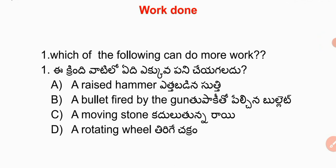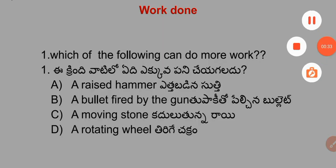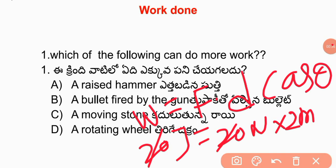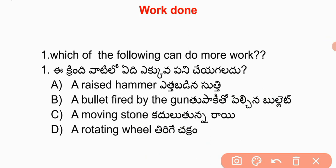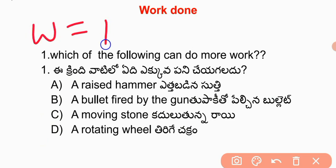The first question is: which of the following can do more work? The options are: a raised hammer, a bullet fired by a gun, a moving stone, and a rotating wheel. We are going to evaluate these 4 options using the formula force into displacement.